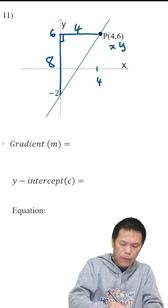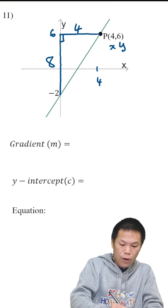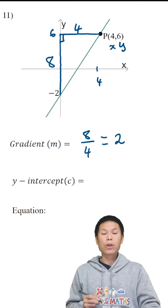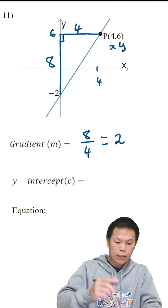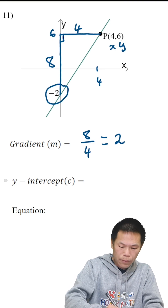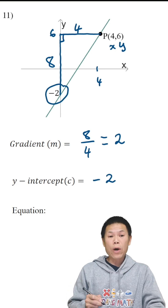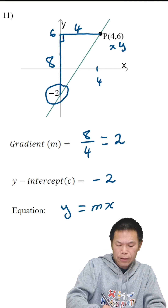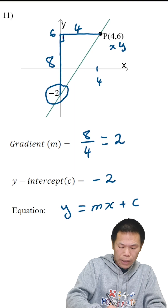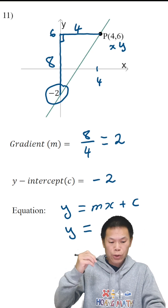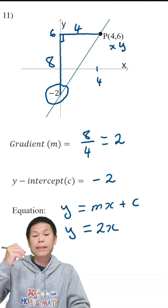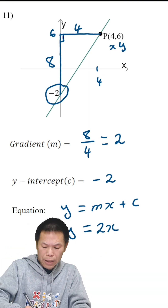So rise over run — positive gradient, so we don't need to write positive. Rise is 8 and the run is 4. So 8 over 4 is 2. And the y-intercept is negative 2. The equation of this line is y = mx + c. So that is y equals — m is 2, so 2x. And plus c, plus negative 2 is minus 2. So the equation is y = 2x − 2.